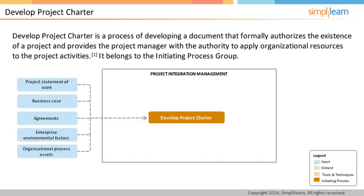Let us look at the tools and techniques used in this process. The first technique is Expert Judgment — an invaluable input to formally authorizing a project because an expert can provide insights into why a project makes business sense or why it does not. From experience, they may be able to shed light on the validity of business drivers, feasibility, assumptions, and constraints. Facilitation techniques help bring all these stakeholders together to engage in fruitful discussions in order to arrive at an informed decision whether to go ahead with a project or not.